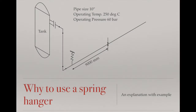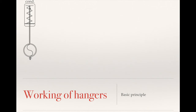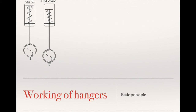Now let's move on to the working of spring hangers. This is a very important part. Suppose this is the pipe and a hanger is placed on it. A rod goes inside the spring can and is tied with the spring. When the pipe moves down in the hot condition, it compresses the spring.